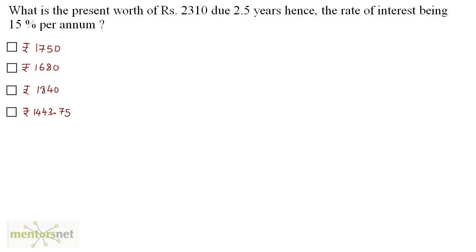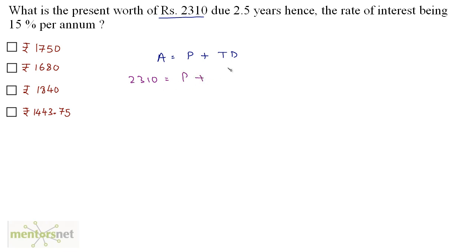What is the present worth of rupees 2310 due 2.5 years hence, the rate of interest being 15% per annum? We have been given the future worth. The amount is basically the principal plus interest, and interest on principal is the true discount. Amount is given as 2310, which equals the present worth P plus the true discount. The formula for true discount is PNR upon 100.